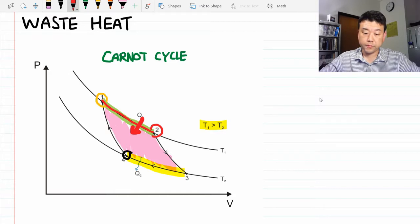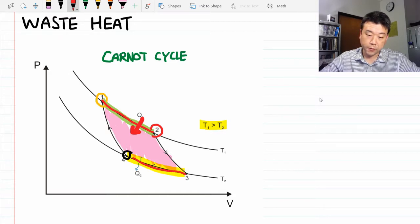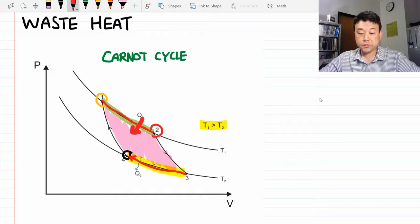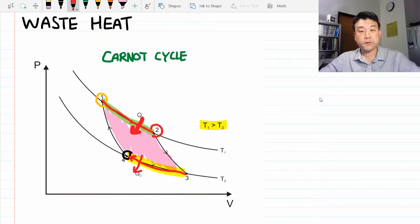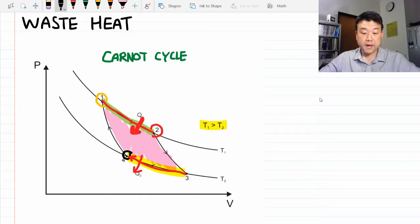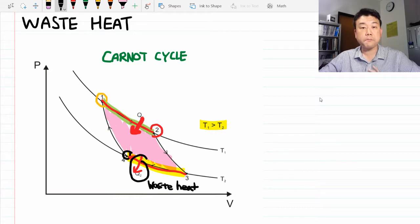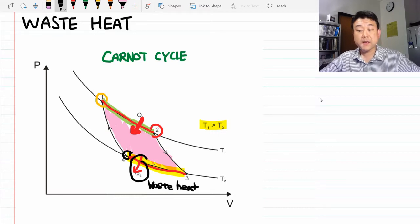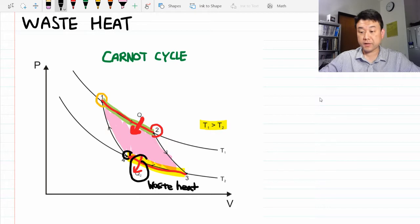The work you have to do back on the engine, compressing it from 3 to 4, turns into this heat output along the isothermal curve from 3 to 4. And this is the waste heat. It's the portion of the input heat that must turn back into heat by the end of the heat engine cycle.